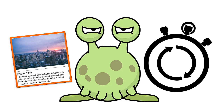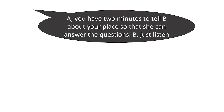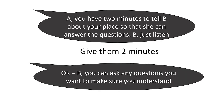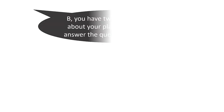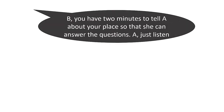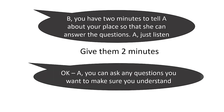Another problem is that one group will inevitably finish much faster because they give very simple answers. One solution is to be directive about timing. Tell group A they have two minutes to tell B about their place so B can answer the questions, and B just listens. Then ask B any questions to check understanding, and swap over. Give group B two minutes to tell A, then A asks questions. This way everybody will be at approximately the same place at the same time.